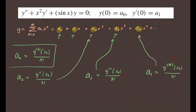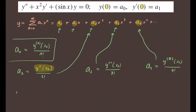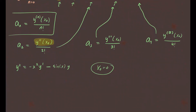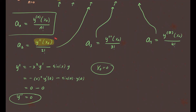To find a₂, we need the second derivative evaluated at x₀ = 0. We look at the differential equation and solve for y″: y″ equals negative x²y′ minus sin(x)·y. Now we plug in x₀ = 0: negative 0²·y′(0) minus sin(0)·y(0). Since 0 times anything is 0, and sin(0) is 0, the second derivative at x₀ equals 0.